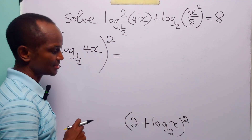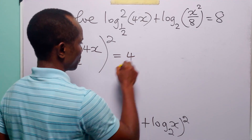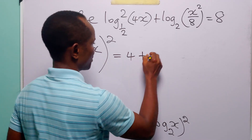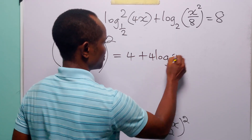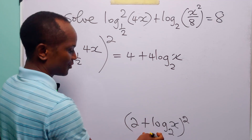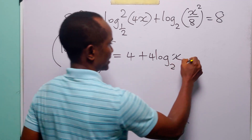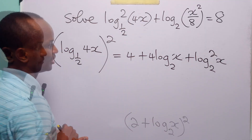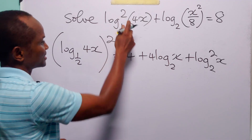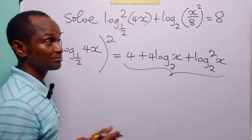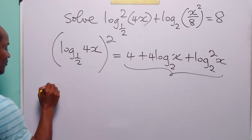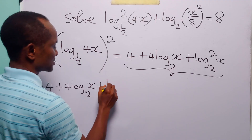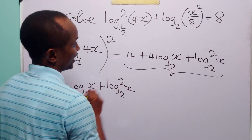Now let us expand this. We have 2 squared, which is equal to 4. We have 2 times 2 times log to base 2 of x, that is plus 4 times log to base 2 of x. And then we have log to base 2 of x, squared — that is log squared to base 2 of x. So after simplification, this first term is equal to 4 plus 4 times log to base 2 of x plus log squared to base 2 of x.